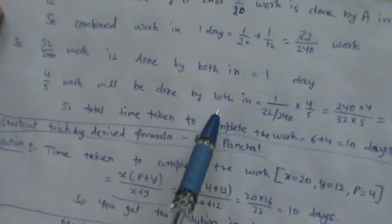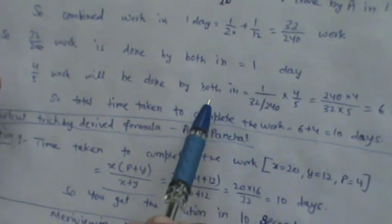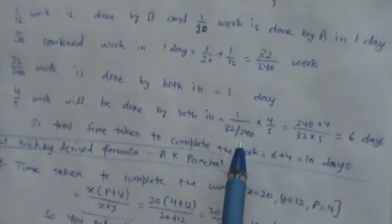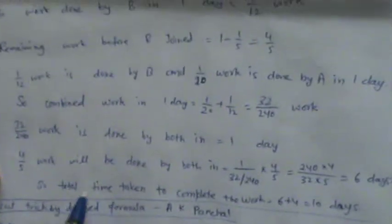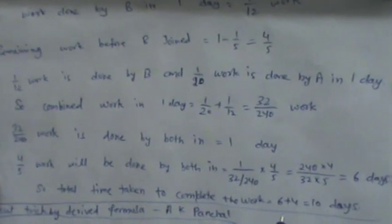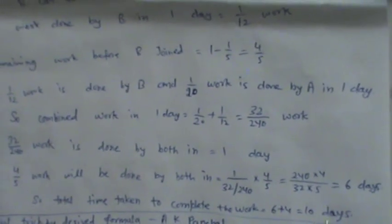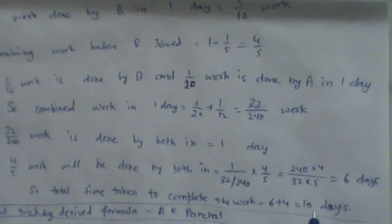Now 32 over 240 work is done by both in 1 day. So 4 over 5 work, both of them will do the 4 over 5 work in, we have to multiply them and we get 6 days. So the total time taken to do the work will be 6 plus 4 is equal to 10 days. But this trick takes near about 3 to 5 minutes.